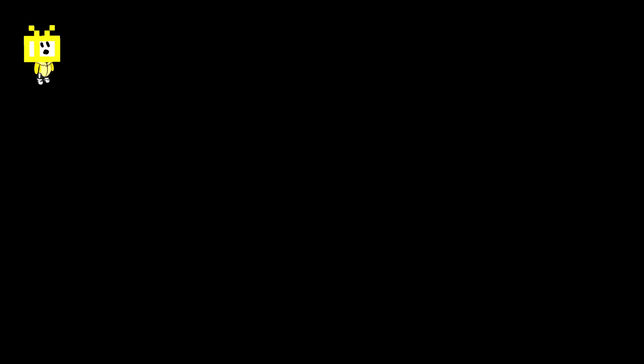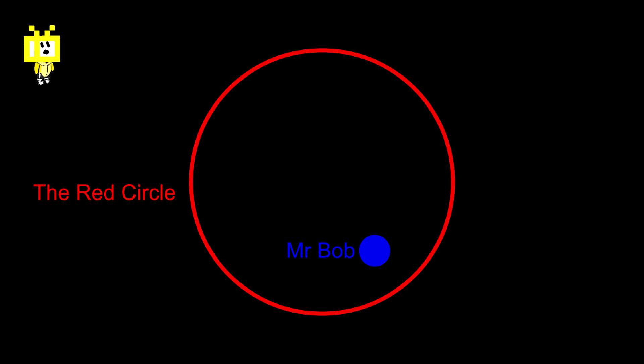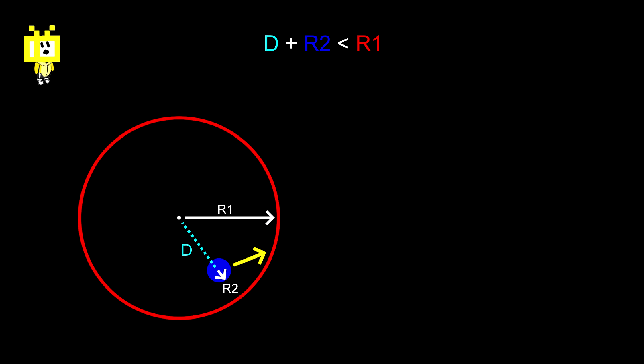But wait, a small detail here for all the developers out there. In something like a video game or simulation, Mr. Bob would have a certain speed, let's say it's 5 units. So instead of checking if D plus R2 is less than R1, we should check if D prime plus R2 is less than R1.